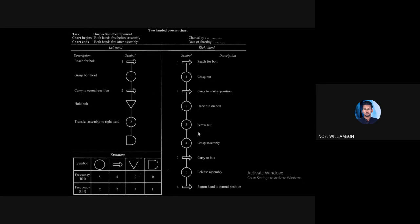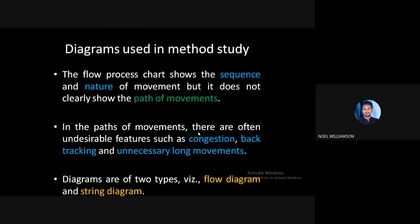In any process chart, only the sequence of operations or the nature of movement is given, but the path of movement — how material or people are actually moving through the facility — is not shown. That is depicted using diagrams such as flow diagrams and string diagrams, which we will discuss in the next class.